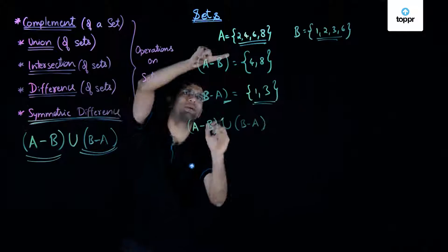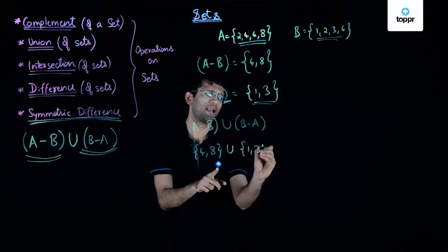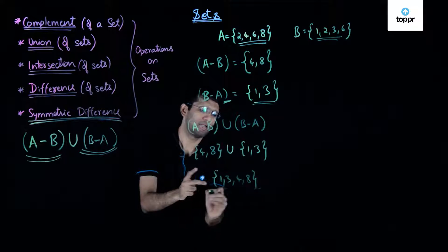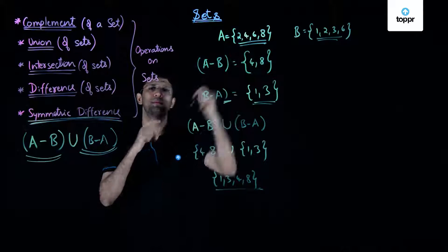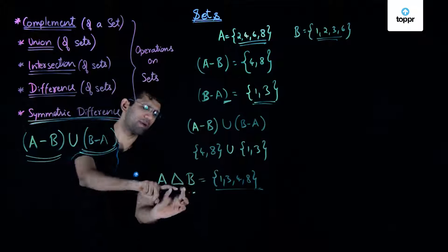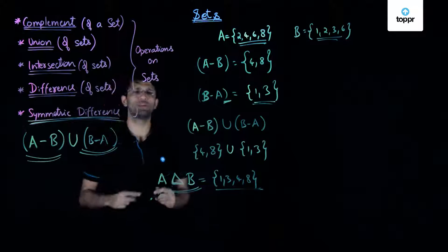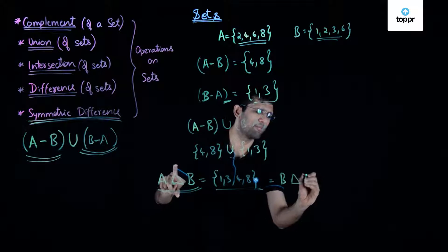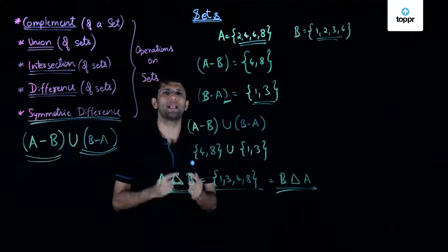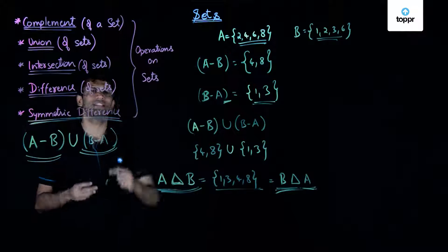Performing the union of these two sets — {4, 8} and {1, 3} — we get 1, 3, 4, and 8 as the final elements of the symmetric difference of sets A and B. The symmetric difference operation is denoted by a specific symbol written between A and B. From the definition, you will realize that the symmetric difference of A and B equals the symmetric difference of B and A, so the symmetric difference operator is commutative. This concludes our general overview of all five operations on sets.